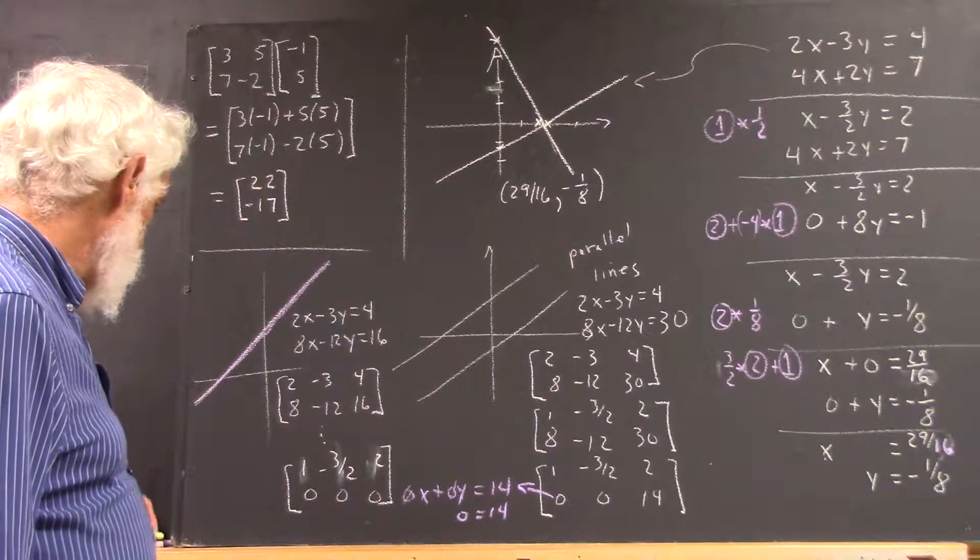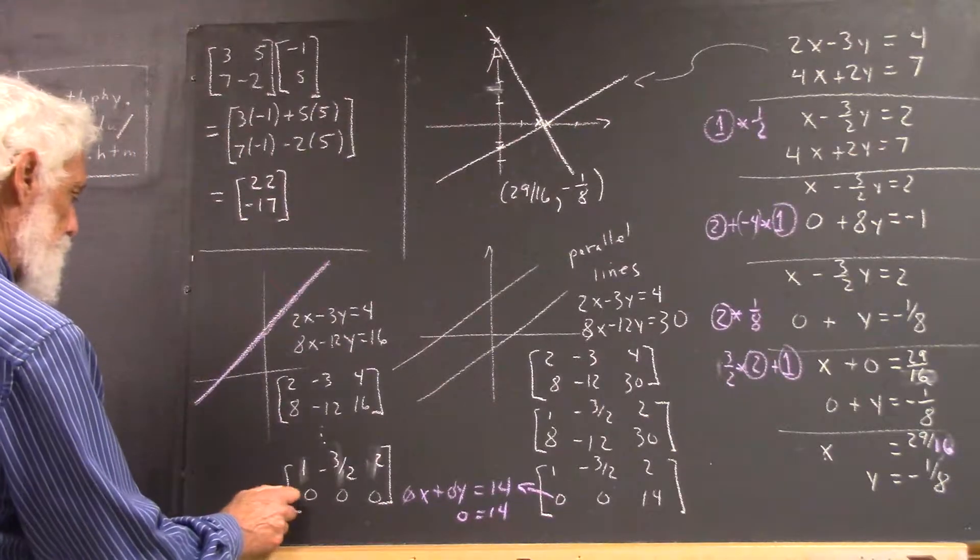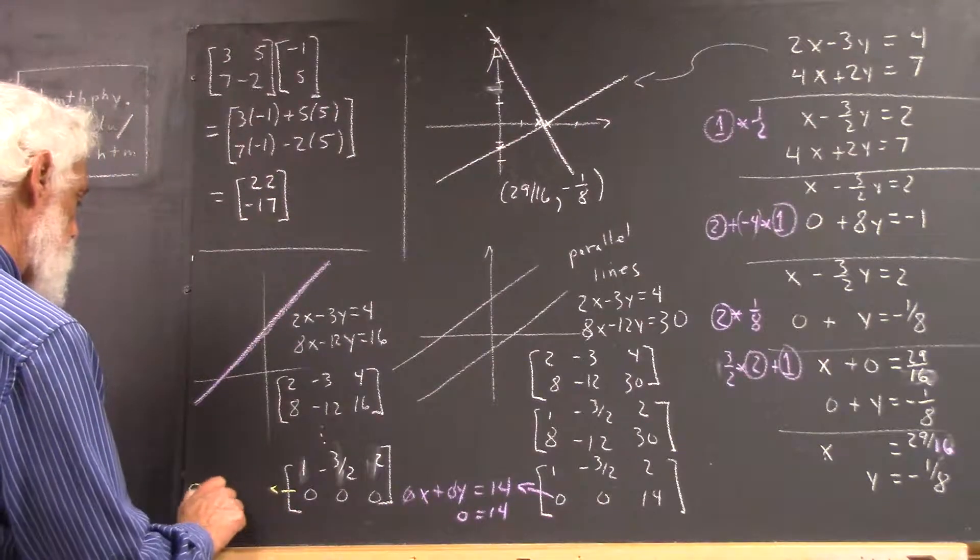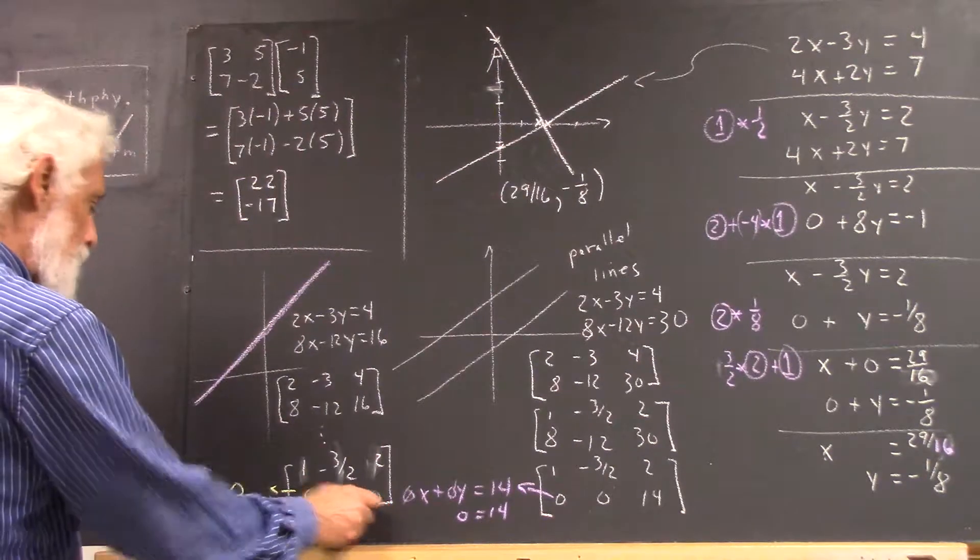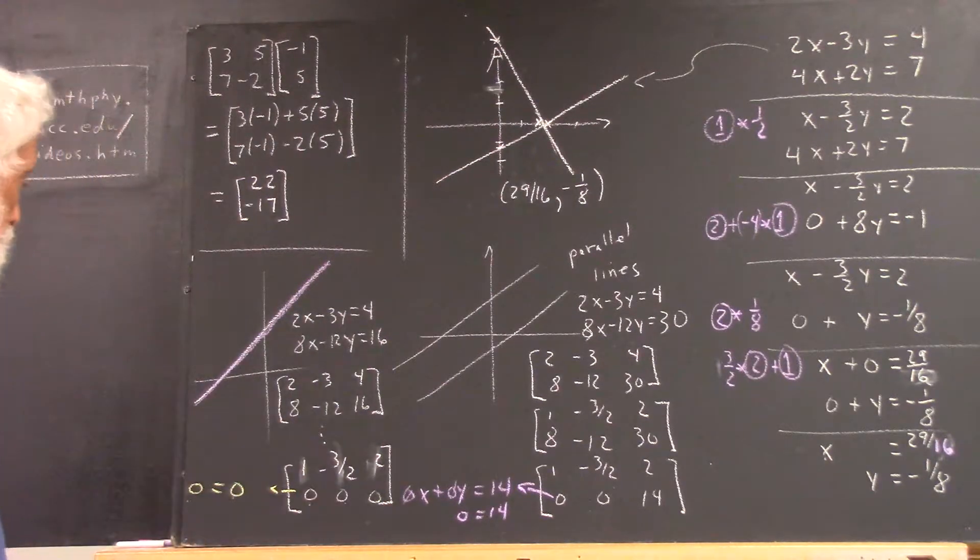Okay, first place, and I didn't get to write it down in class, but this just says that 0 equals 0. So 0x plus 0y is 0, and we've got a 0 on the right-hand side. This is true,